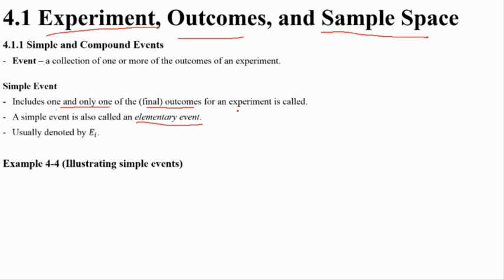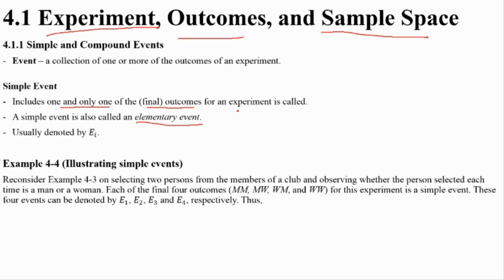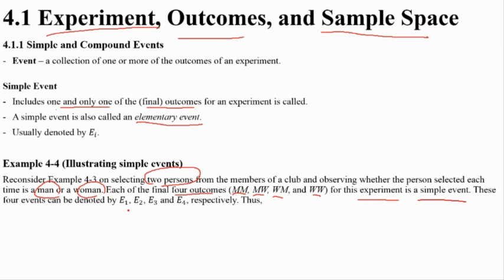Look at Example 4.4: select two persons from a group club and observe whether each is a man or a woman. The possible outcomes are: both men, man then woman, woman then man, or both women — so there are four possible outcomes. Each individual outcome like e1, e2, e3, e4 is a simple event.